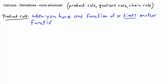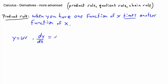This is how and when we actually want to use the product rule. Let's say you have y equals u times v, where u and v are both functions of x. Then the product rule says dy/dx equals u times dv/dx plus v times du/dx — in other words, take u multiplied by the derivative of v with respect to x, and add that to v times the derivative of u with respect to x.